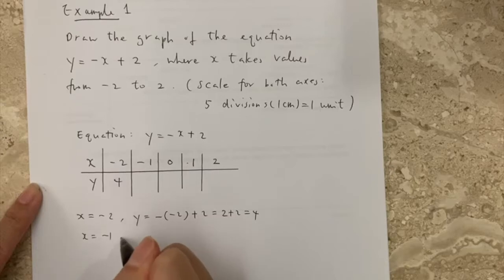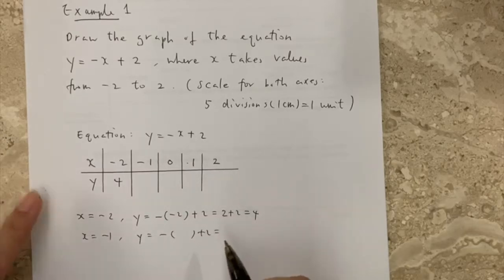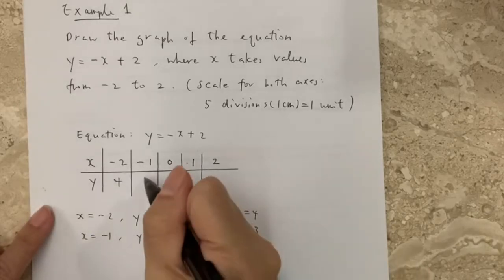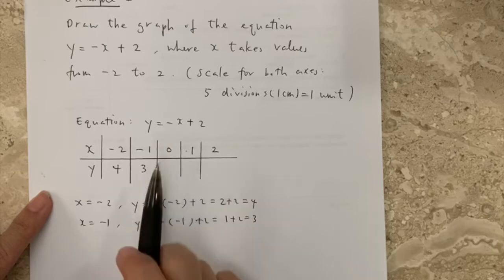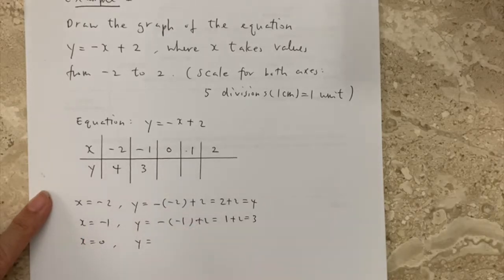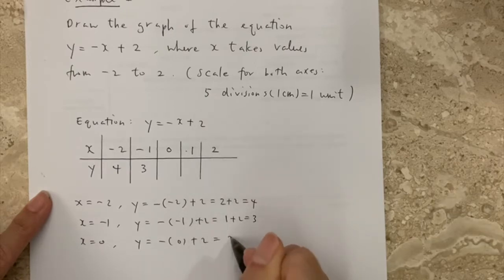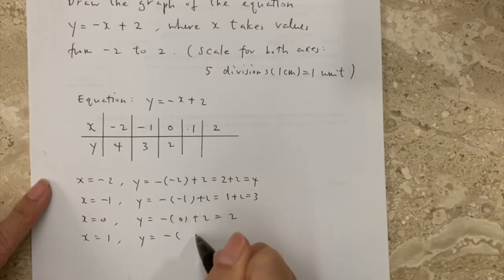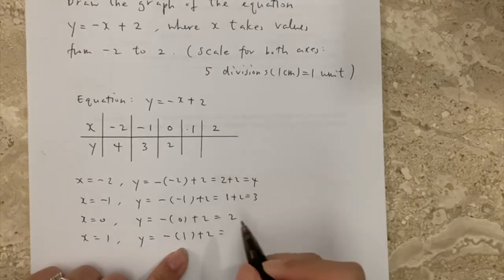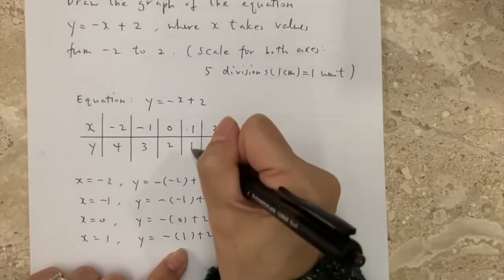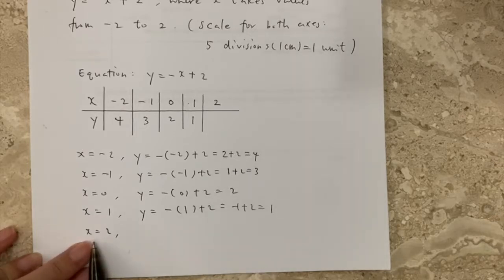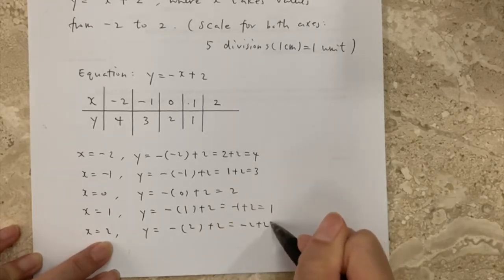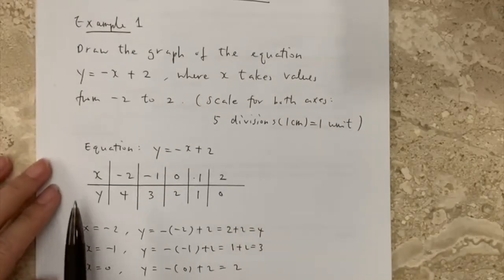Next, when x equals minus 1, using substitution: plus 1 plus 2, which is 3. When x equals 0, that is 0 plus 2, which is 2. When x equals 1, that is minus 1 plus 2, which is 1. And finally, when x equals 2, that is minus 2 plus 2, which is 0. Now I have all the coordinates for x and y.